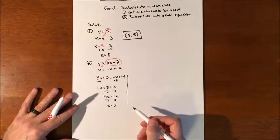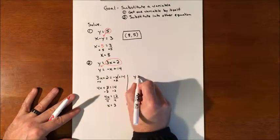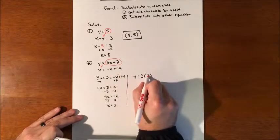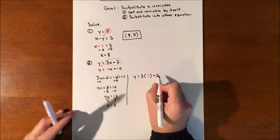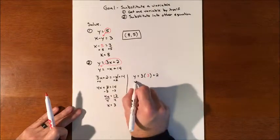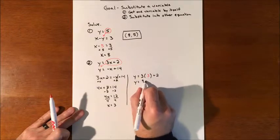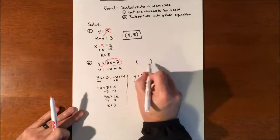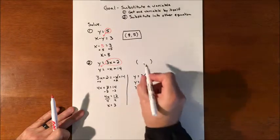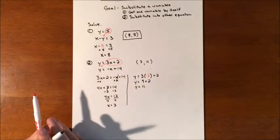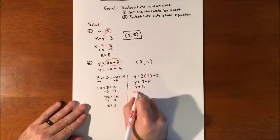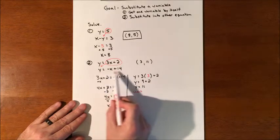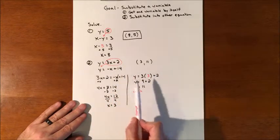It doesn't matter which equation you substitute into — whichever looks easier. Using the first equation: y equals 3 times 3 plus 2. So y equals 9 plus 2, which means our y value equals 11. If we graph these two lines, they should cross at (3, 11). To check, we take this coordinate and substitute it into the other equation — we just used the top one to get the y value.